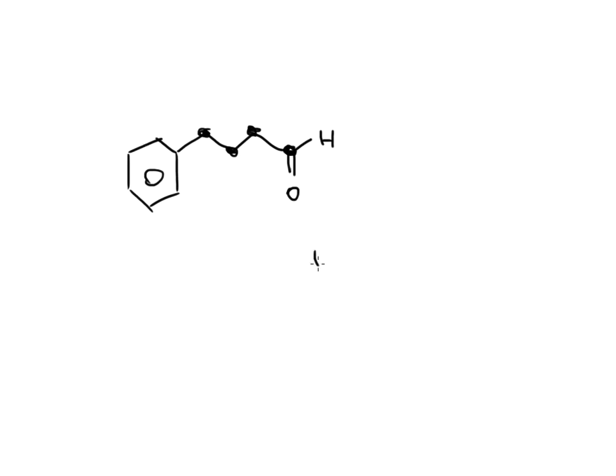So I need to name this as an aldehyde. Carbon number 1, carbon number 2, carbon number 3, carbon number 4. I can't really go into this because that's not part of the longest carbon chain. That's just something that's hanging off. So I really only have 4 carbons here in the longest carbon chain. So in the IUPAC, this is going to be a butanal. Drop the E and add -al for the aldehyde.